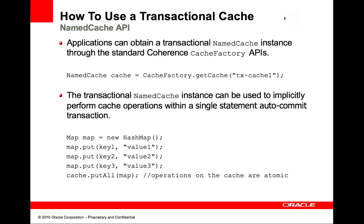The following example demonstrates a simple client that obtains a transactional named cache instance from the cache factory. The client performs a put all operation that is only committed if all the put operations succeed. The transaction is automatically rolled back if any part of the put all operation fails.